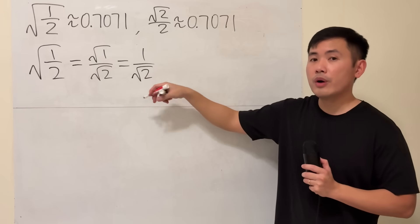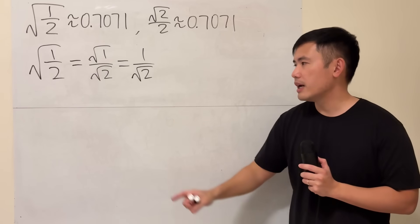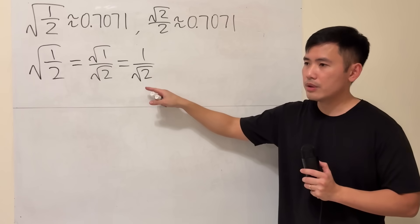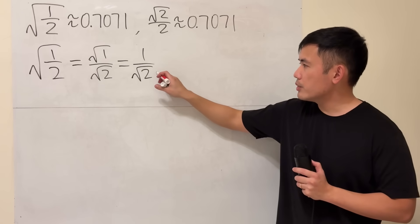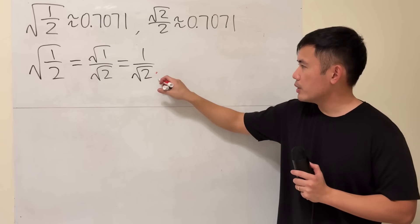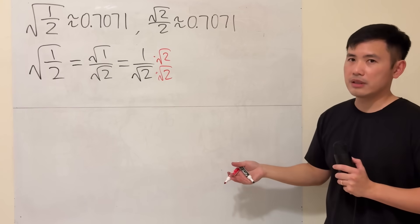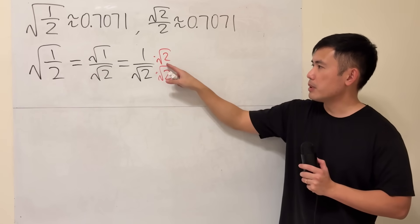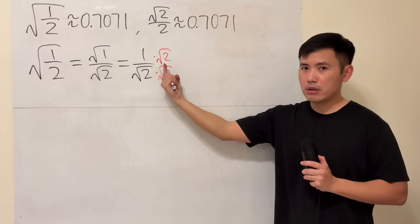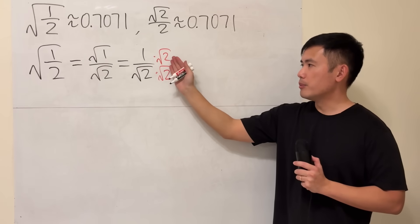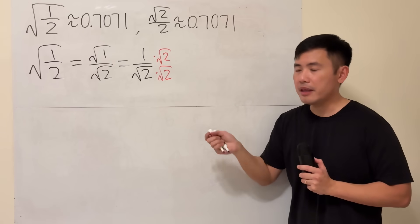Square root of 2 is what we call an irrational number, because you cannot think of two numbers that multiply to give you 2. So let's do this: I'm actually going to multiply by square root of 2, and then we have to do the same thing on the top, because this is like multiplying by 1 — they cancel. When you have a fraction and multiply by 1, it does not change it, so you have to multiply the top and bottom by the same thing.